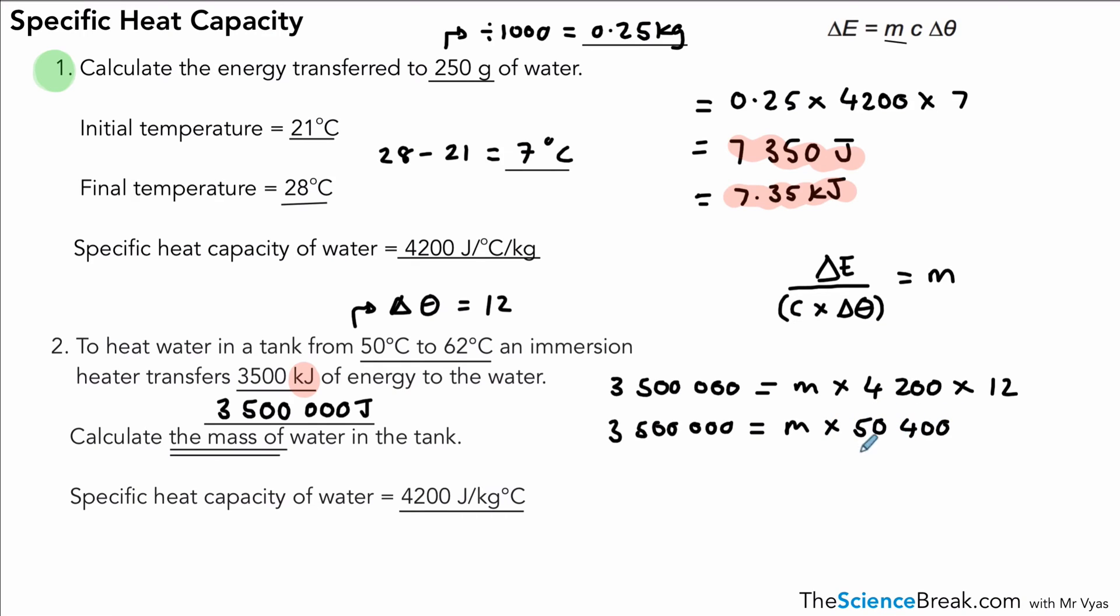So it's 3.5 million divided by 50,400, and that gives us an answer of 69.4 recurring. So we could just leave that as 69.4, and we're looking for the mass, so that's 69.4 kilograms. And if you look at the question, we're talking about heating water in a tank, so 70 kilograms sounds about right.